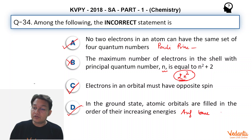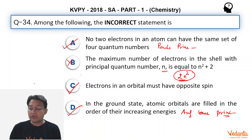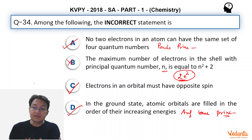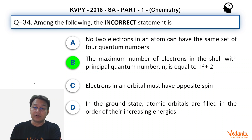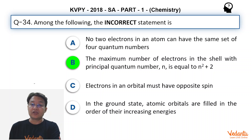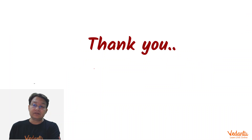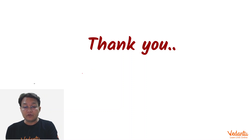So the only incorrect option is option B, and so our answer is B. Very simple, straightforward question of atomic structure. Thanks for watching. Stay tuned for discussions over the course.